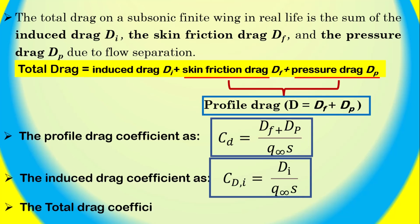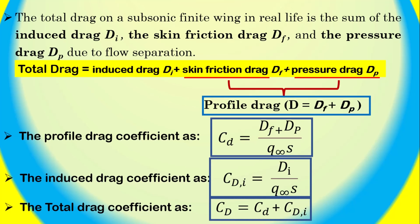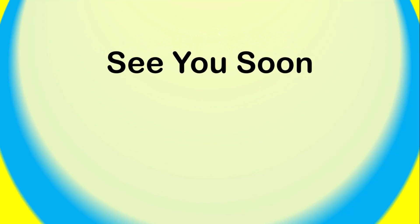The total drag coefficient equals the profile drag coefficient plus the induced drag coefficient. I hope you now have a better understanding of the concepts in incompressible flow over finite wings, specifically downwash and induced drag.